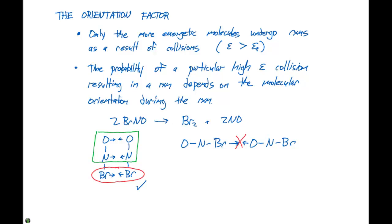On the other hand, if I had this ONBR molecule and it's moving this way, and it came into contact with the molecule orientated BRNO, and it would be moving this way, then once again we can form the BR2 product and then the two NO molecules will separate off.